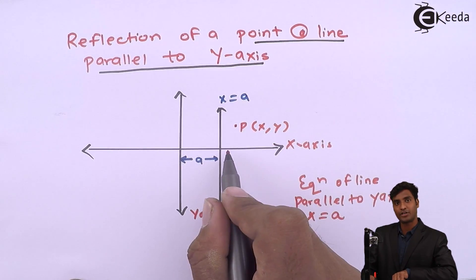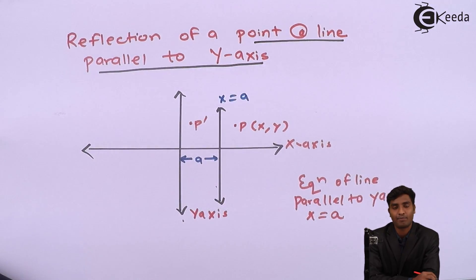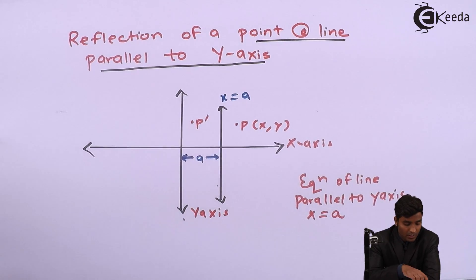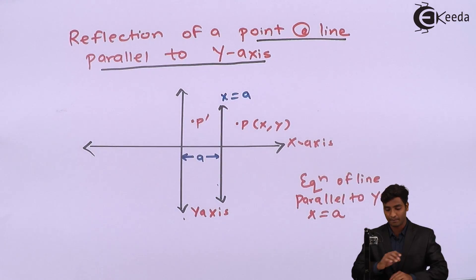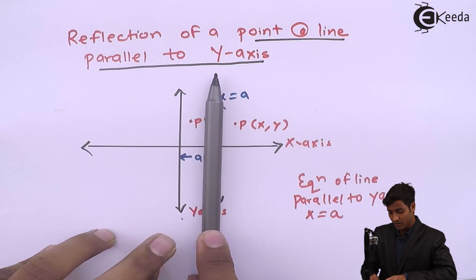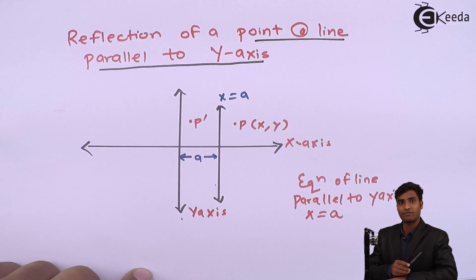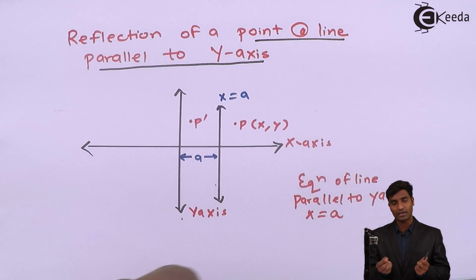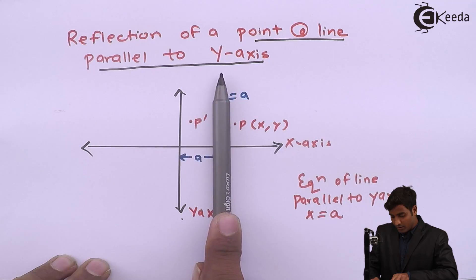This point P(x, y) is to be reflected about this line parallel to the y-axis. After reflecting, I will name the reflected point as P-dash. We need to derive the matrices for reflection of a point about a line parallel to the y-axis. We have standard matrices for reflection about the x-axis and y-axis, but not for a line parallel to the y-axis, so we will derive it by performing a series of transformations. We need to bring this line onto the y-axis, perform the mirror, then place it back.